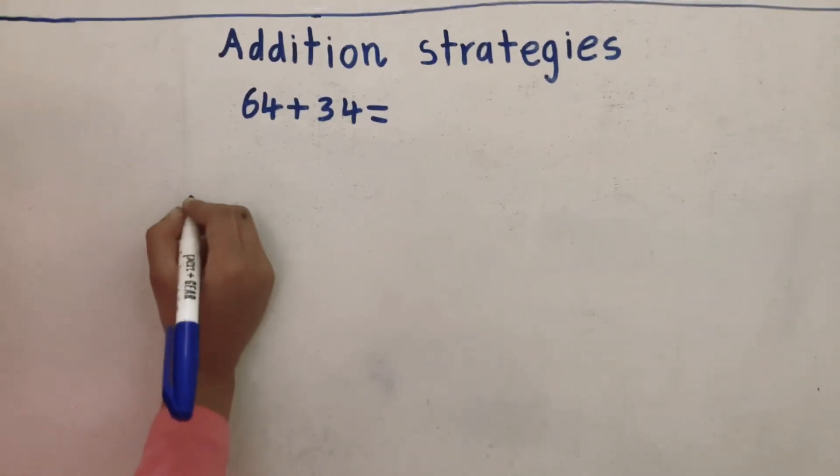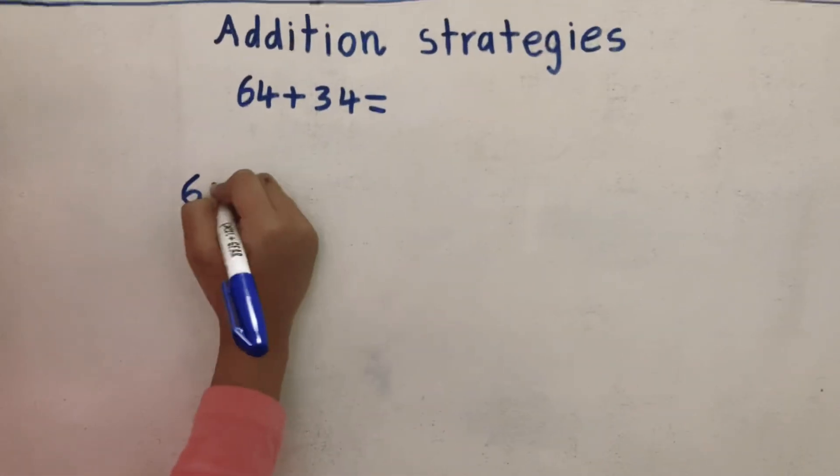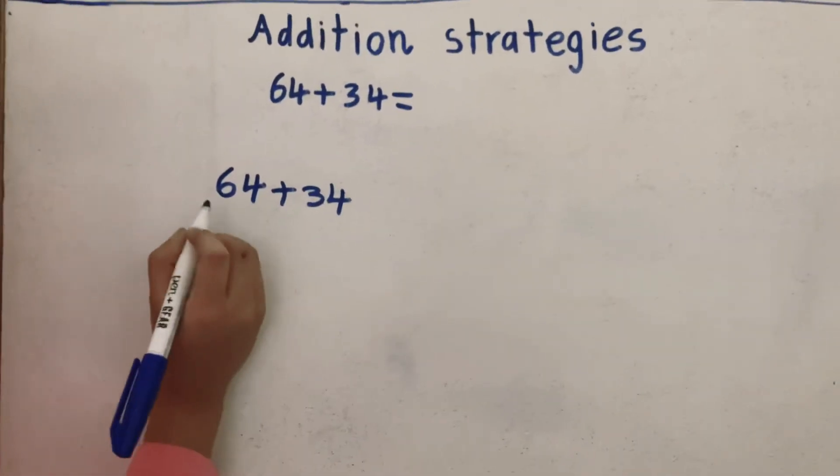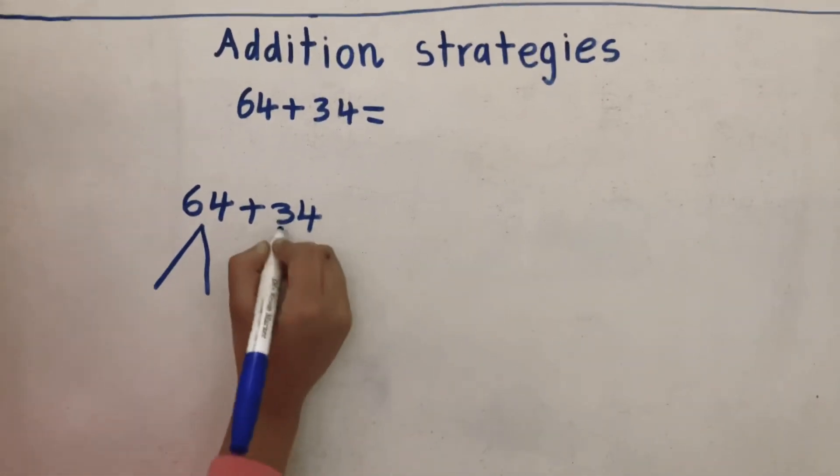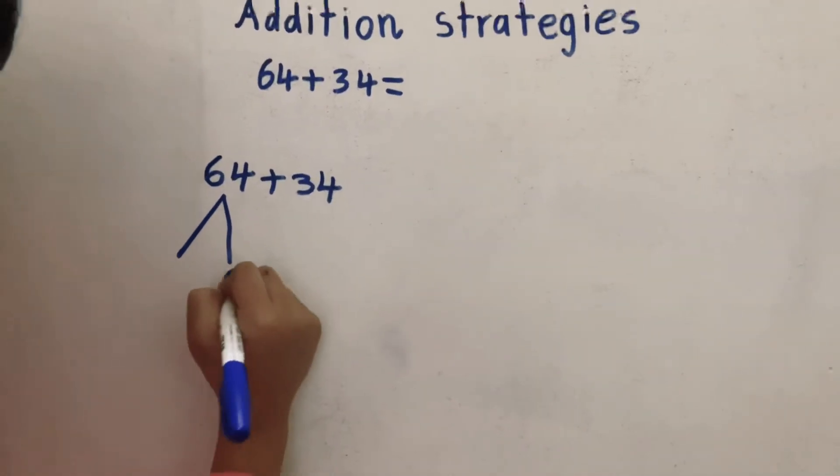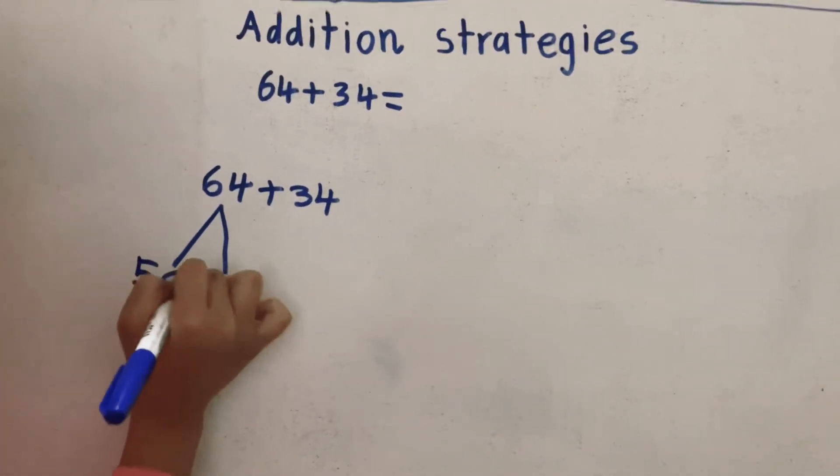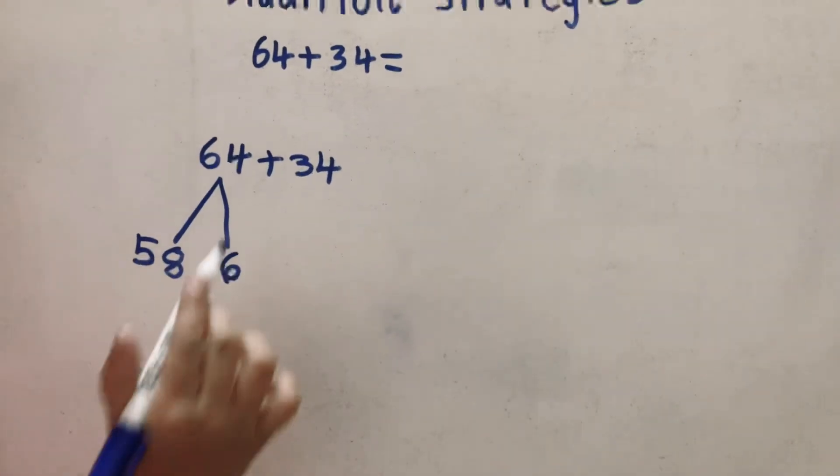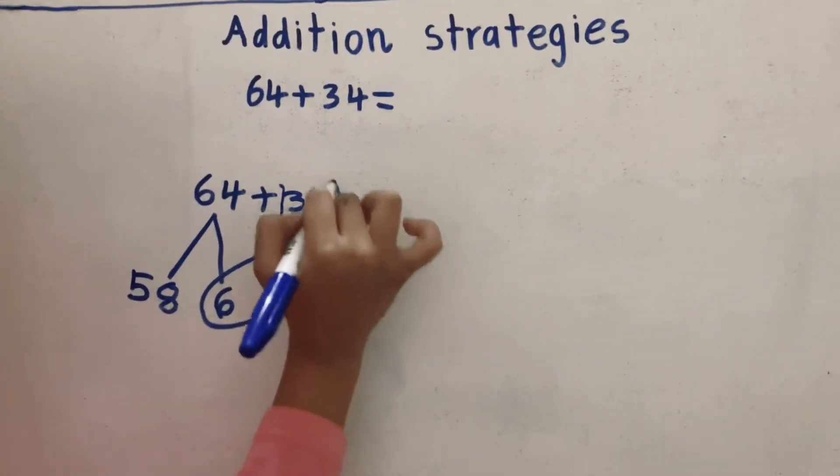Our third strategy is the jelly bean. So this is how you do it. You're gonna write 64 plus 34. So now you're gonna take the bigger number and you're gonna separate it like that. So then the 34 needs a 6 so that it can get to the nearest 10. So I'm gonna put a 6 here and I'm gonna put a 58 here. So make sure 58 plus 6 equals 64. So now what I'm gonna do is take the 34 and just do a jelly bean shape. That's why it's called jelly bean. You can see it's like a little jelly bean shape.